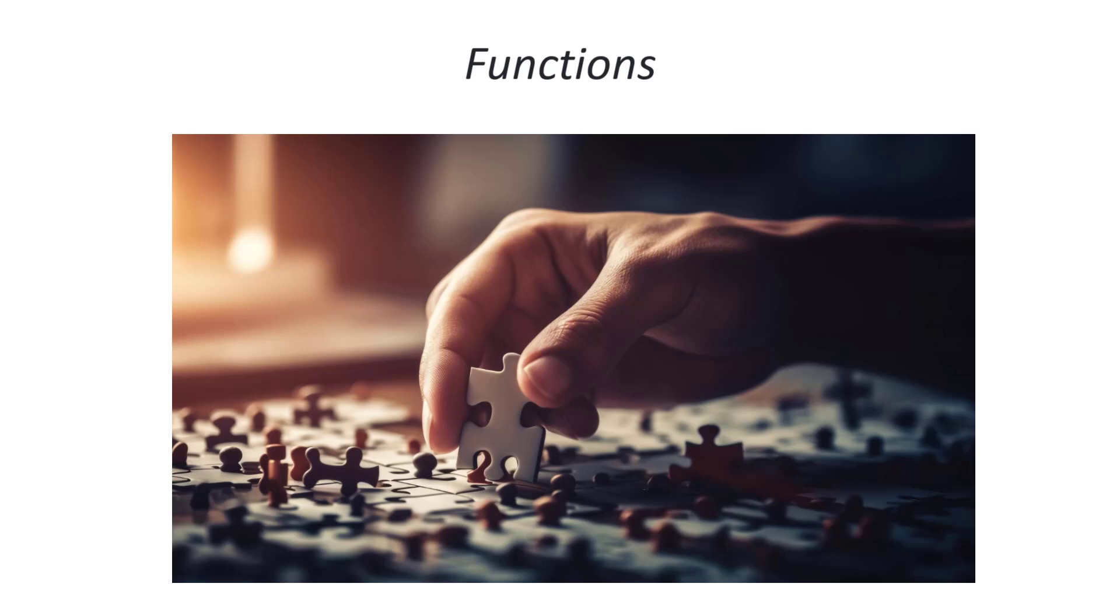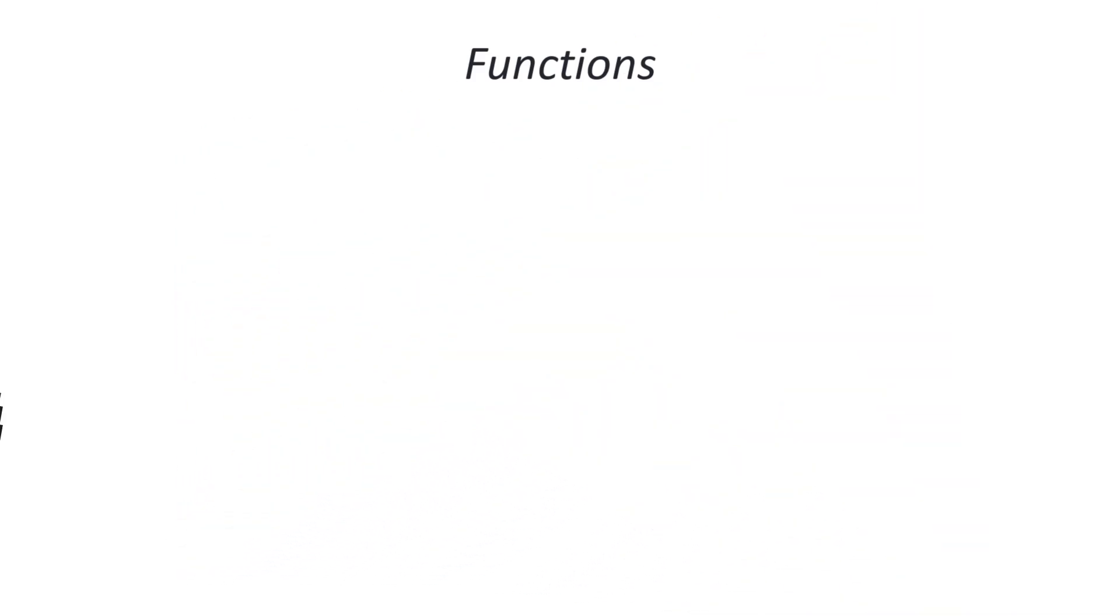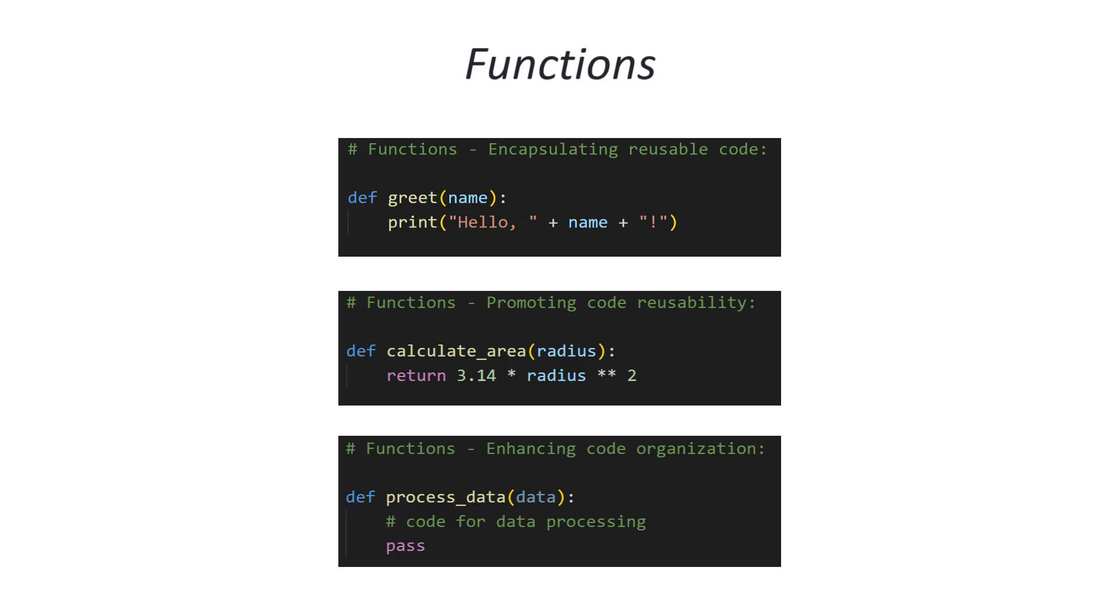Functions are named blocks of code that perform specific tasks. They can take inputs called parameters and produce outputs known as return values. By defining functions, you can avoid repetitive code and promote code reusability, leading to more efficient and modular programs. Here are some common use cases for functions, which include promoting code reusability and enhancing code organization. Functions play a crucial role in structuring Python programs, promoting code organization, readability, and maintainability.